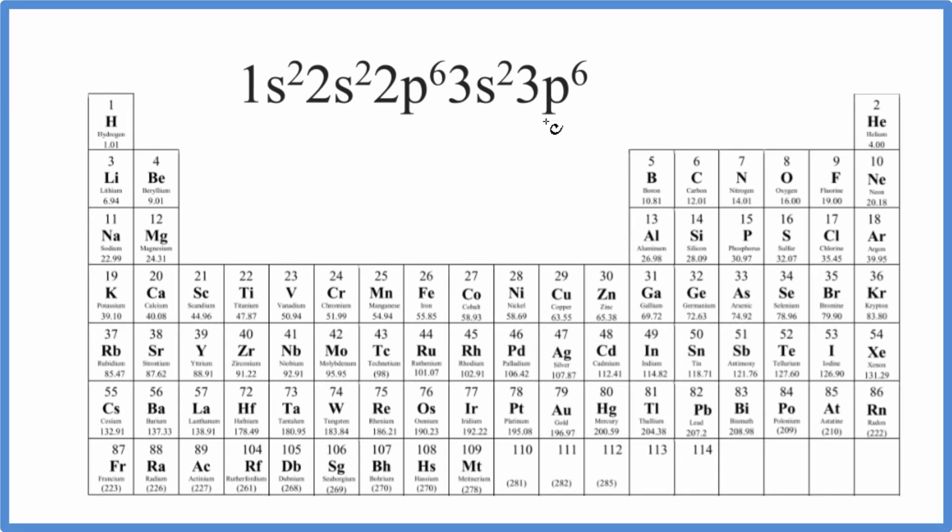The question is, this electron configuration here, 1s2 2s2 2p6 3s2 3p6, what element does this correspond to on the periodic table?